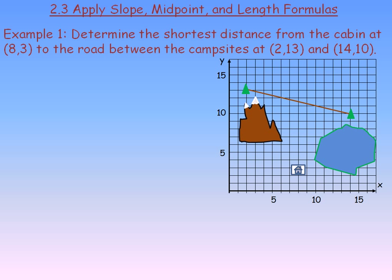In the first example we are asked to determine the shortest distance from a cabin at the point (8,3) to a road that connects campsites at (2,13) and (14,10). This is the road that is being built, and of course it would go up here perpendicular to this road between the campsites. If it didn't go perpendicular, then it wouldn't be the shortest possible road.